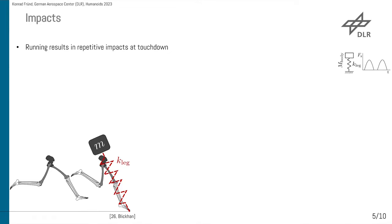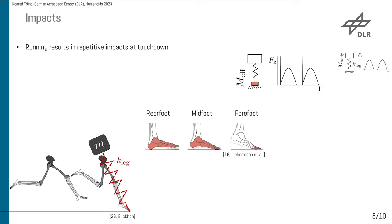Now, if we take a look at the real system, you will always have an effective, or also called unsprung, mass, which results in a force shock in our ground reaction force. Looking at the human, there are three different foot postures for running: a rear-foot and a mid-foot posture, where the heel will touch the ground, and a forefoot posture, where the heel never touches the ground. This reduces the unsprung mass.